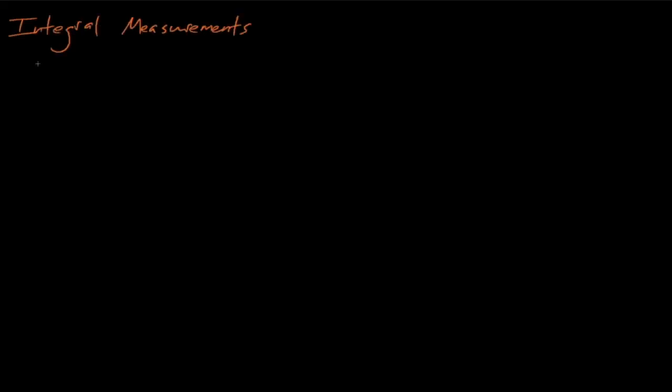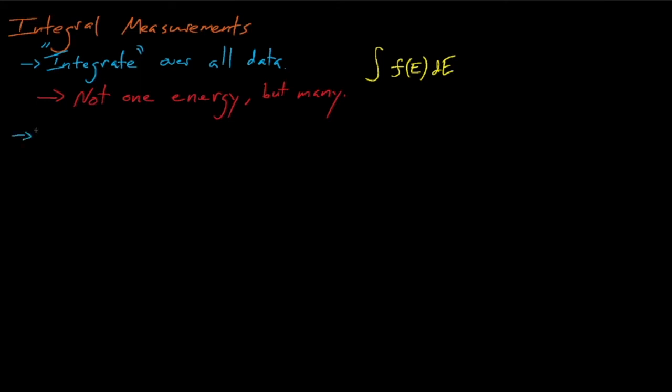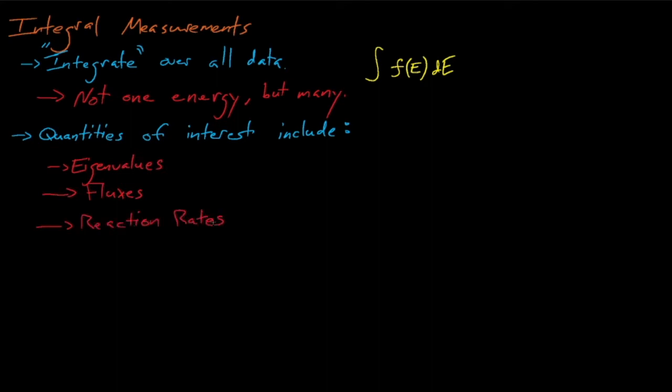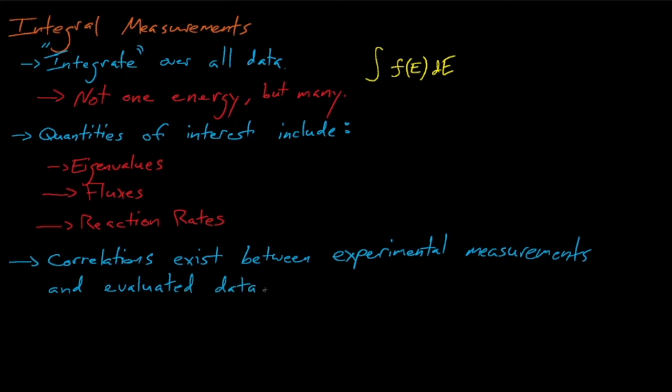In contrast, integral measurements test the accuracy of cross-sections by integrating the differential data to measure more macro-scale observable parameters, such as a system's eigenvalue or energy-integrated reaction rates in some activation foil. If computational simulations, such as those from the MCNP Monte Carlo code, produce results that match these integral experiment measurements, then it provides confidence that our nuclear data are accurate, and that we can accurately predict the behavior of similar kinds of systems. If these simulated and experimental measurements don't match, then it's a sign that the nuclear data need to be tweaked. This tweaking process introduces some correlations between the nuclear data and the integral benchmark experiments, and most nuclear data evaluation methods currently ignore this correlation. This is a bit beyond the scope of this course, but treating these correlations is the subject of ongoing research.